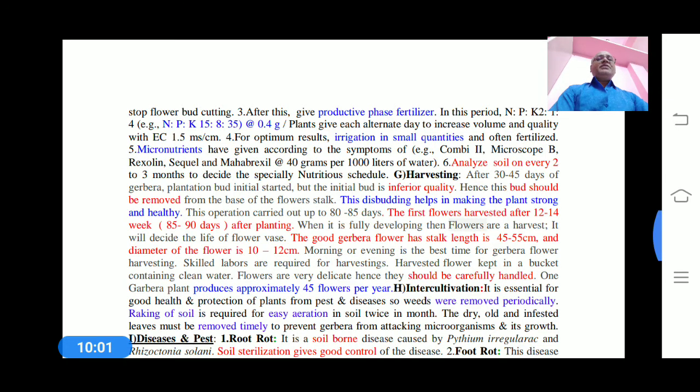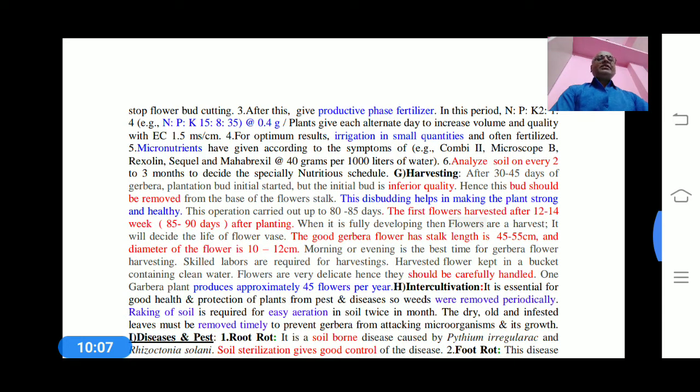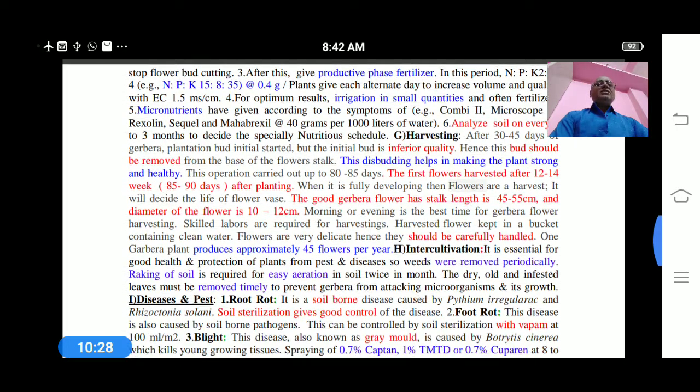For watering, optimum irrigation in small quantities should be offered to the plant with fertilization. Micronutrients are essential for plants to grow very well. There are many micronutrient chemicals available in the market.